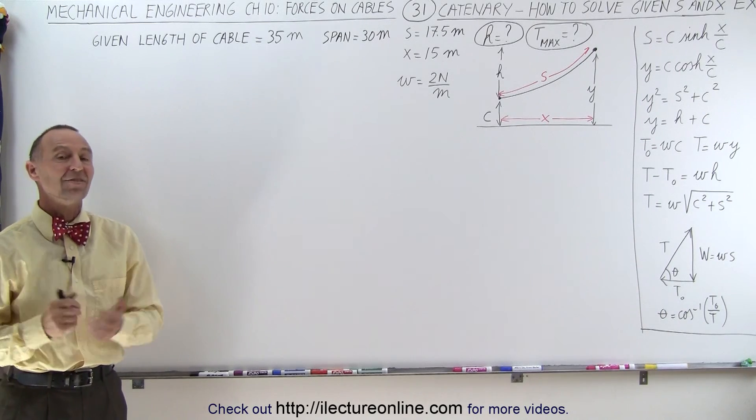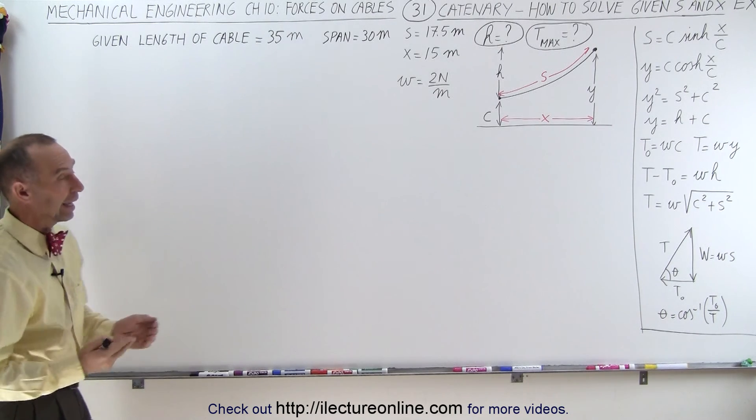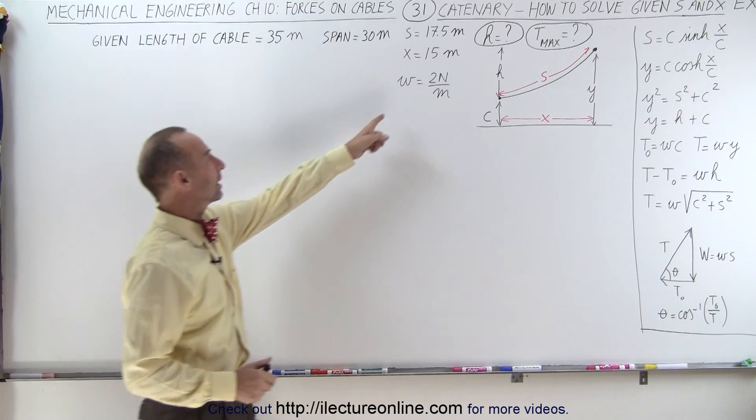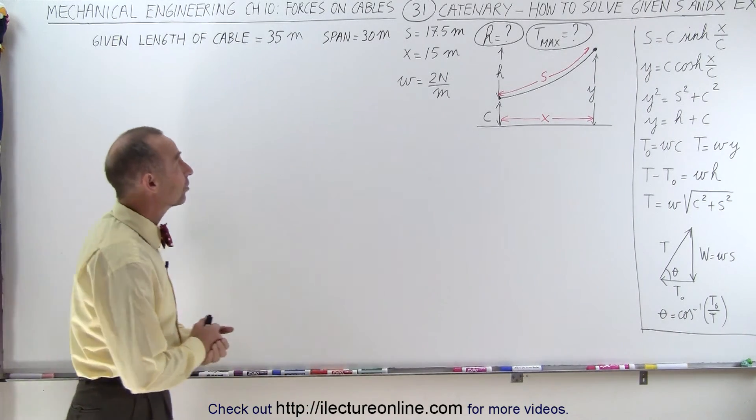Welcome to ElectronLine. In this example, we're given a cable that has a length of 35 meters and it spans across 30 meters. The weight of the cable is 2 newtons per meter, or the weight per unit length.